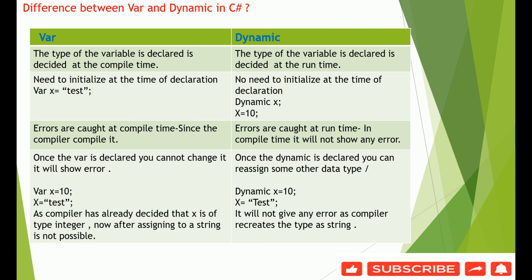In the case of dynamic, the type of the variable is decided at runtime. There is no need to initialize at the time of declaration. For example, dynamic x = 10 or x = "test" are both valid with dynamic.